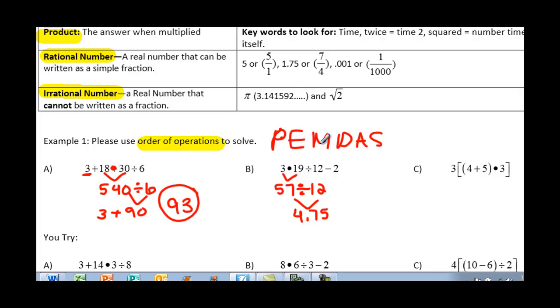All right, we have no other multiplication and division in that problem. We have no addition. So then we're going to go ahead and subtract that last number. We're going to subtract 2. So 4.75 minus 2, I'll be left with 2.75 as my answer.